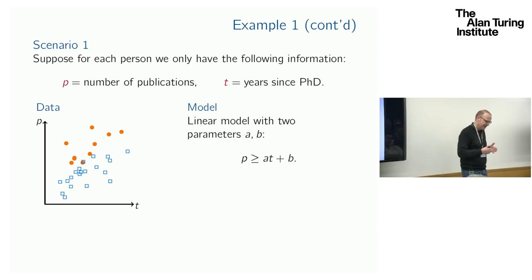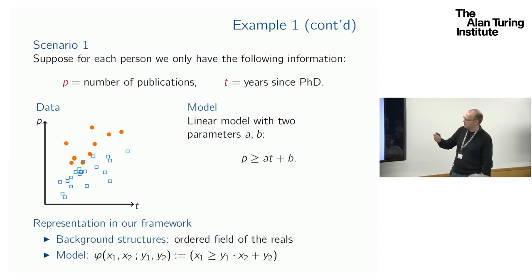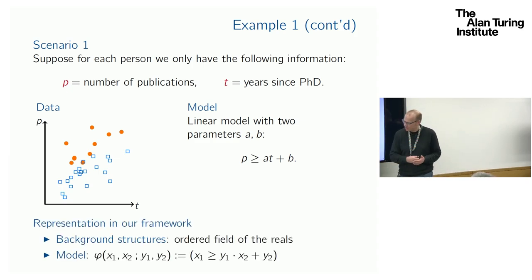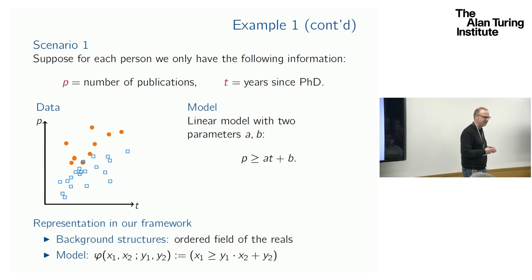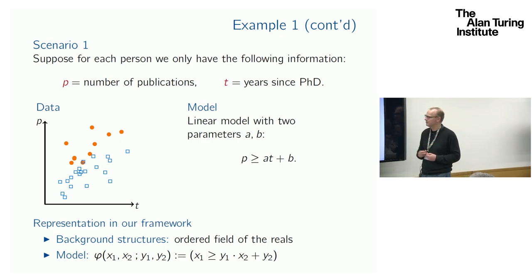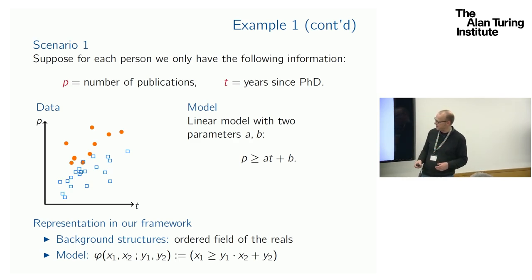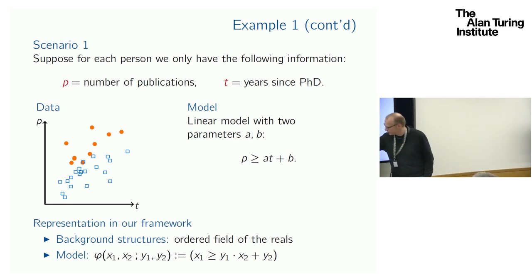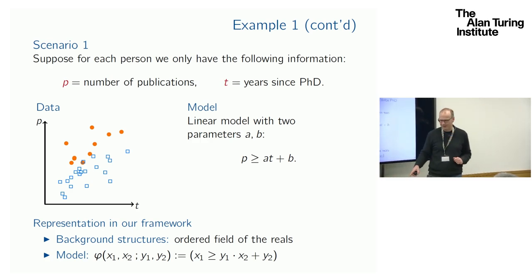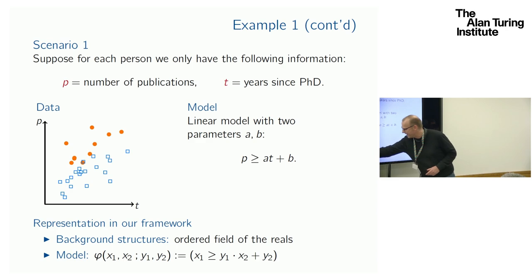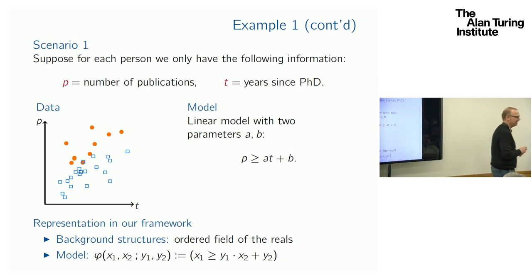This is very much in the realm of standard machine learning techniques, but we can phrase it in our framework. The background structure would simply be the ordered field of the reals, where we can express the necessary arithmetic, or it could also be the two-dimensional vector space over the reals. Our model would be precisely this linear thing. We have two variables for the parameters — the y variables — and the x variables always describe the instances.